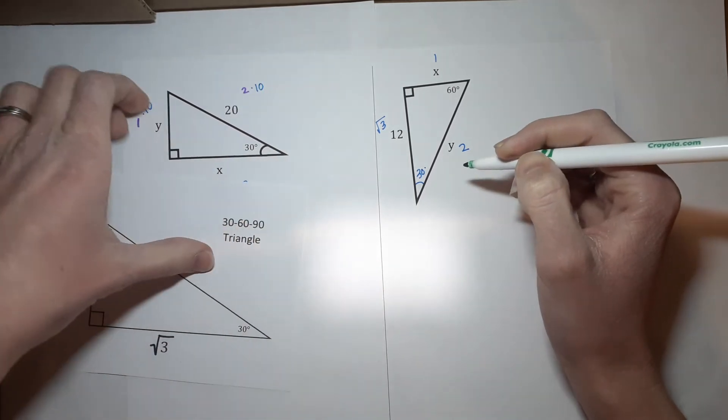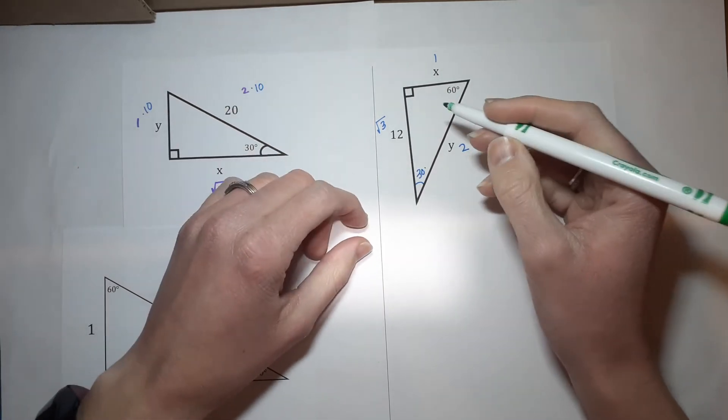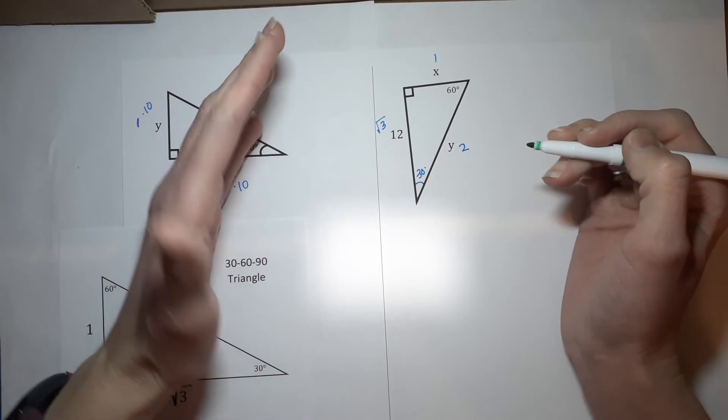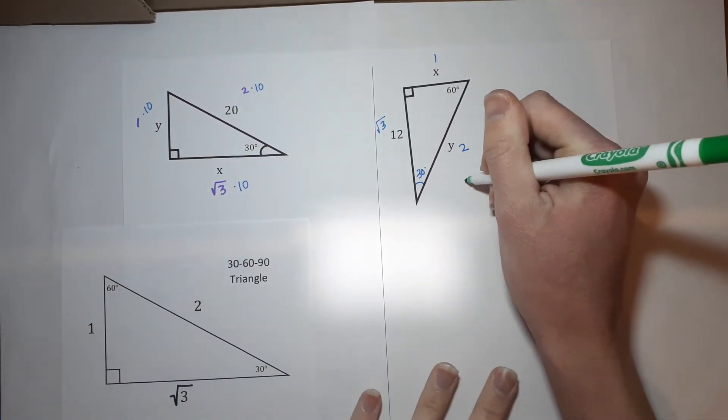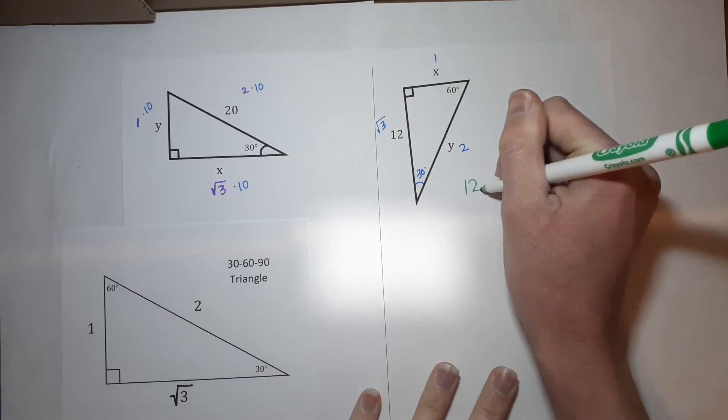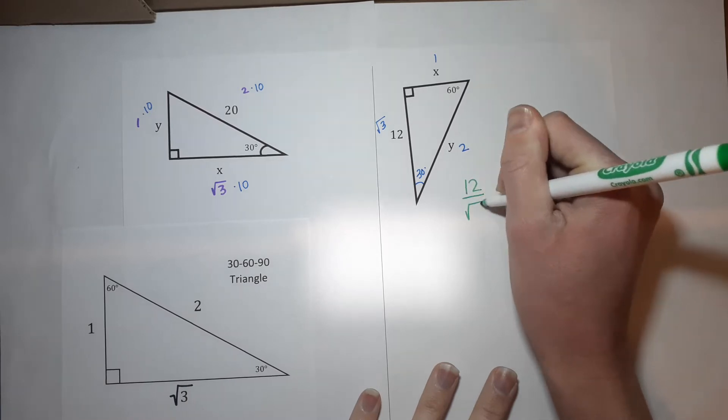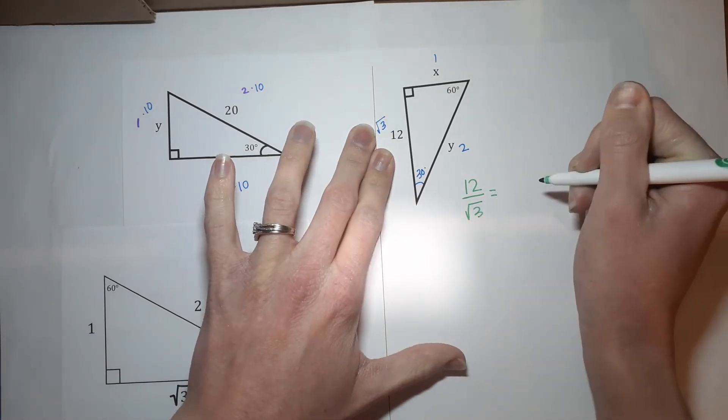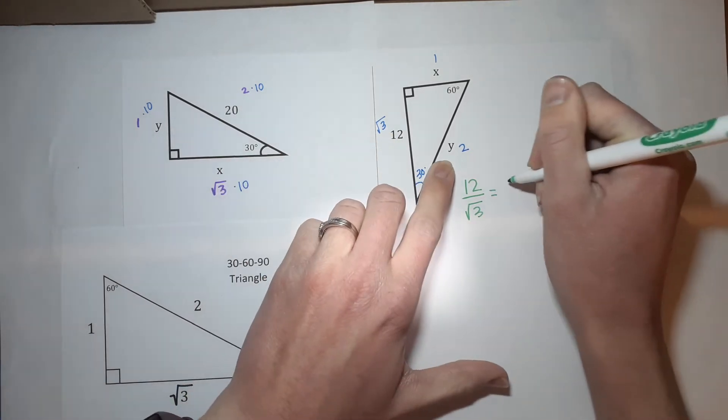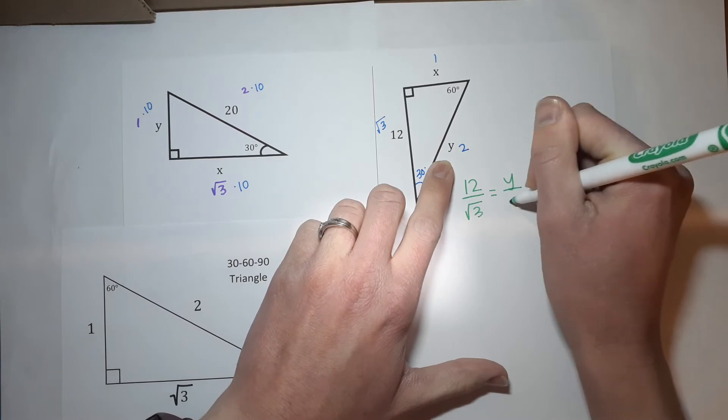Just like over here, they were all multiplied by 10. Oh, gosh. They were all multiplied by the same thing. It's just not so easy to figure out what that was this time. So, how we do that is, we set up the relationship between 12 and the square root of 3, they're buddies,